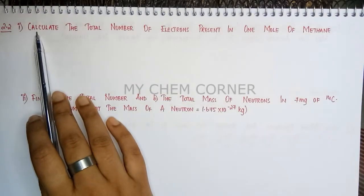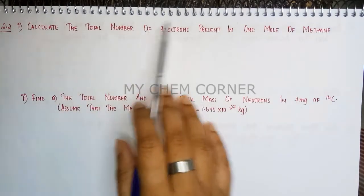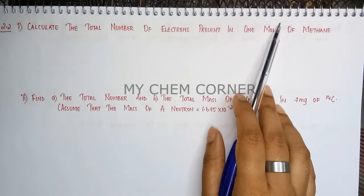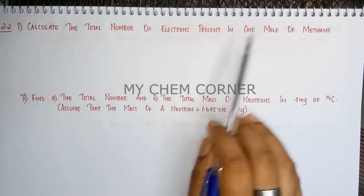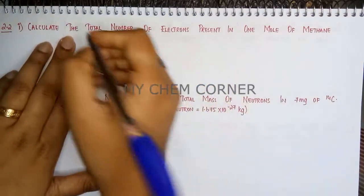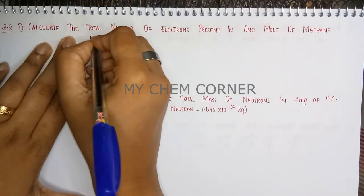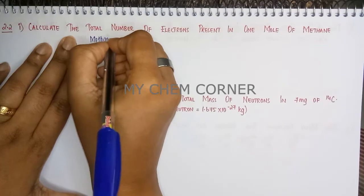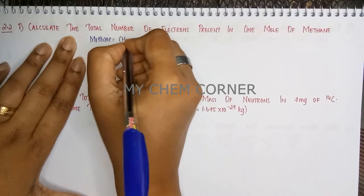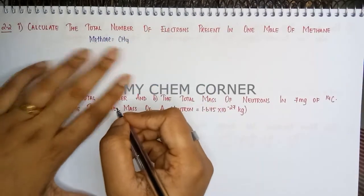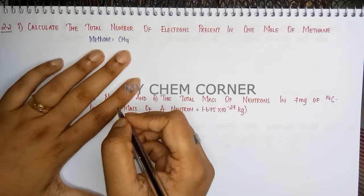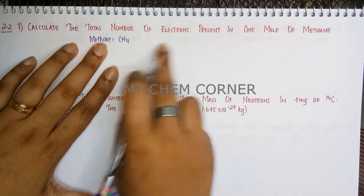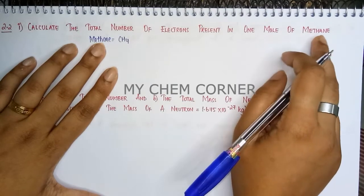The question is: calculate the total number of electrons present in one mole of methane. First, we need to know the formula of methane, which is CH₄.